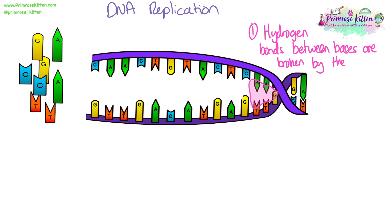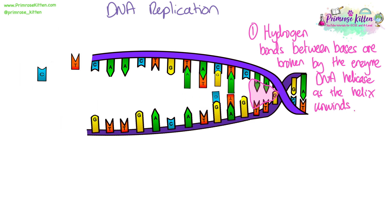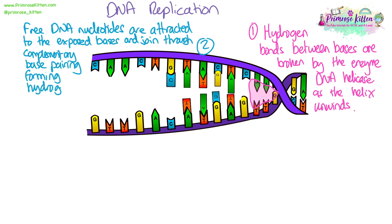Here we have our DNA helix, and you can see that it has started to unwind. The hydrogen bonds between the bases are broken by the enzyme DNA helicase, which pushes along as the DNA unwinds, separating the two strands and creating two template strands. The free DNA nucleotides in the nucleus are then able to come along and bind through complementary base pairing to their complementary base on each template strand, because the bases on the template strand are now exposed.